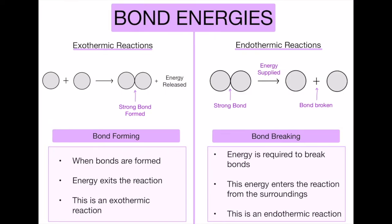Within exothermic and endothermic reactions, another useful thing to know about is bond energies. On a scientific level, these reactions work specifically in how they break and form bonds. In exothermic reactions, two separate atoms form a strong bond which releases energy. In endothermic reactions, a bond is broken which needs energy — breaking a bond requires energy from the surroundings, separating it into two atoms, which makes it endothermic.